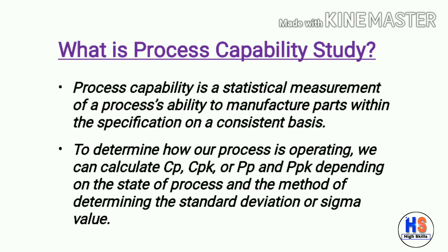First of all, we need to understand what is process capability study. Process capability is a statistical measurement of a process's ability to manufacture parts within the specification on a consistent basis. Specification will be the voice of the customer. To determine how our process is operating, we can calculate CP, CPK, PP, and PPK depending upon the state of the process.